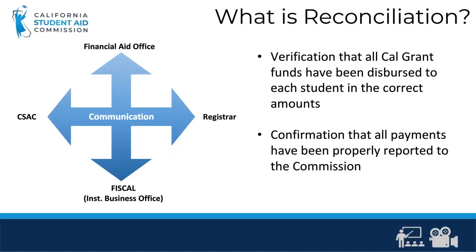We are going to start with Reconciliation. Reconciliation is a verification that all Cal Grant funds have been disbursed to students and those disbursements have been correctly reported to the Commission via the WebGrants roster through the application of the appropriate payment codes and dollar amounts.